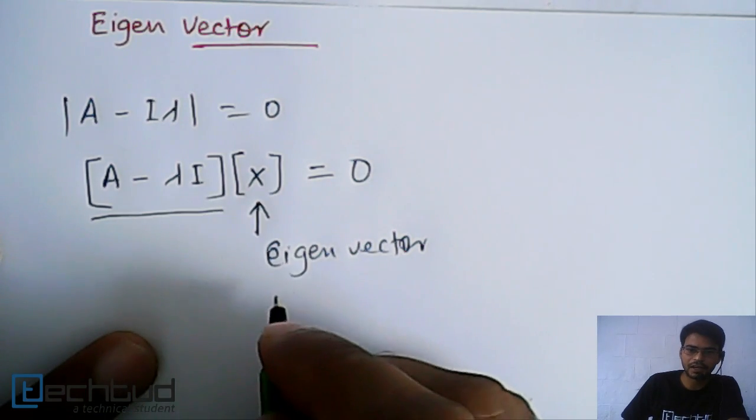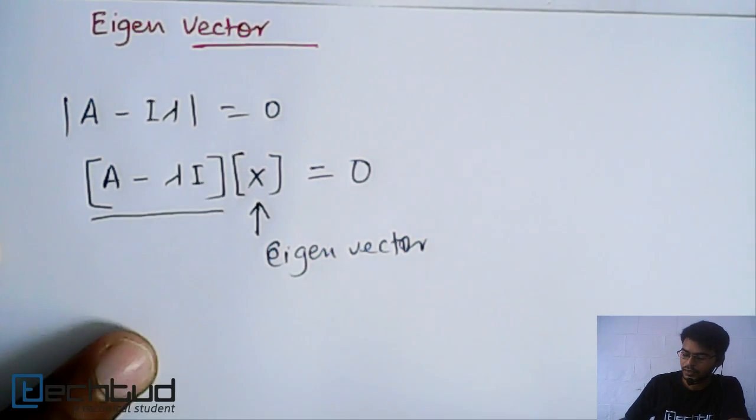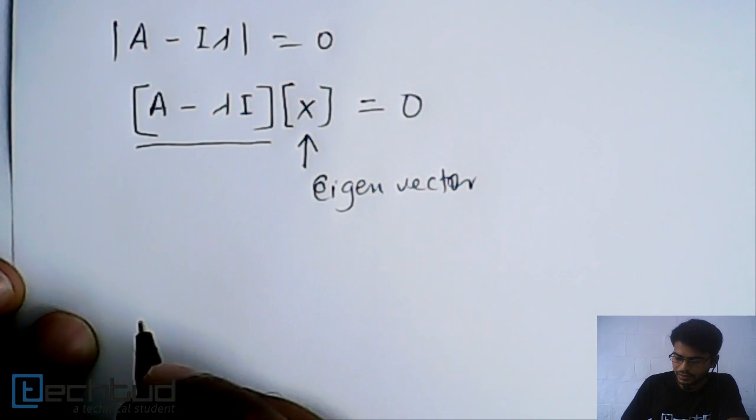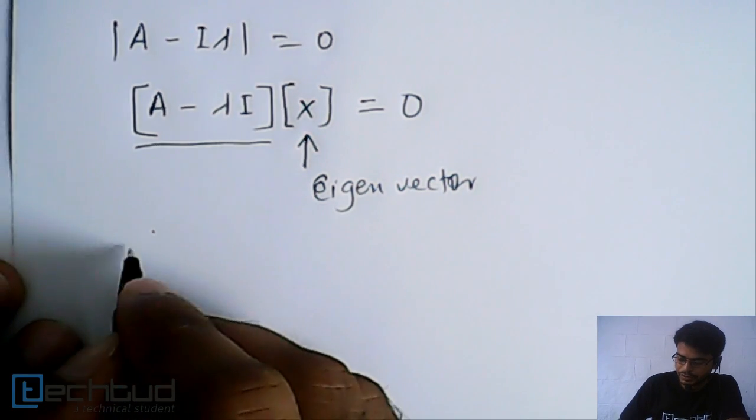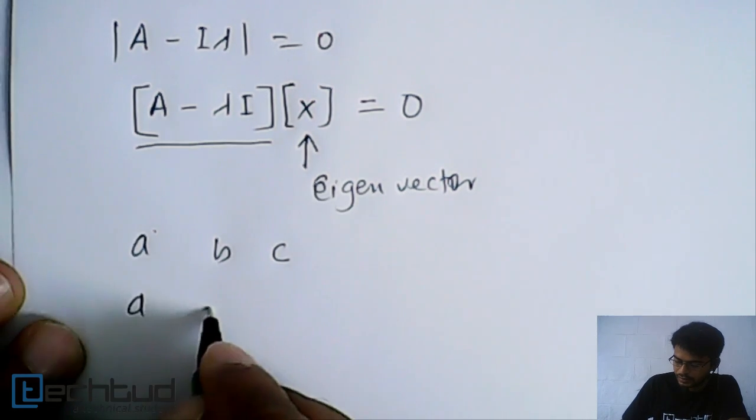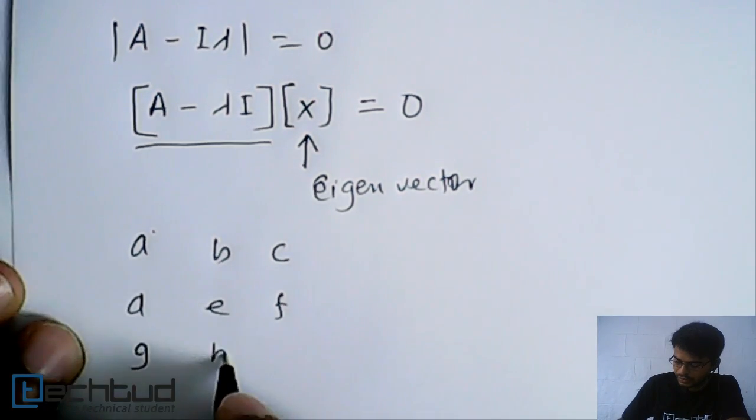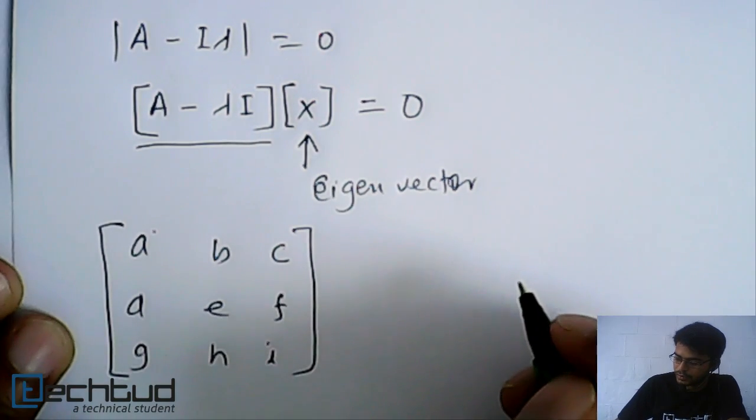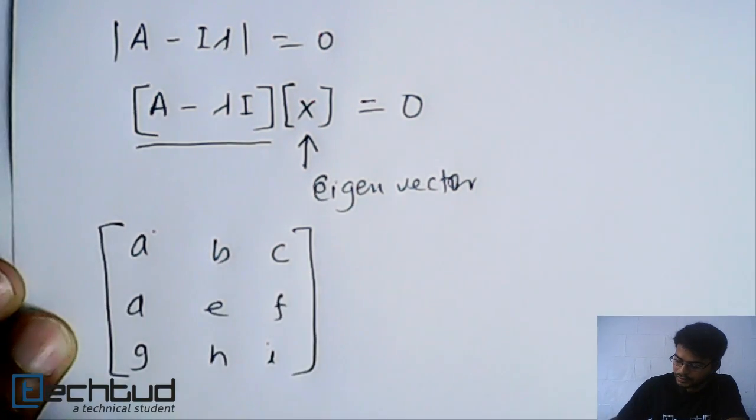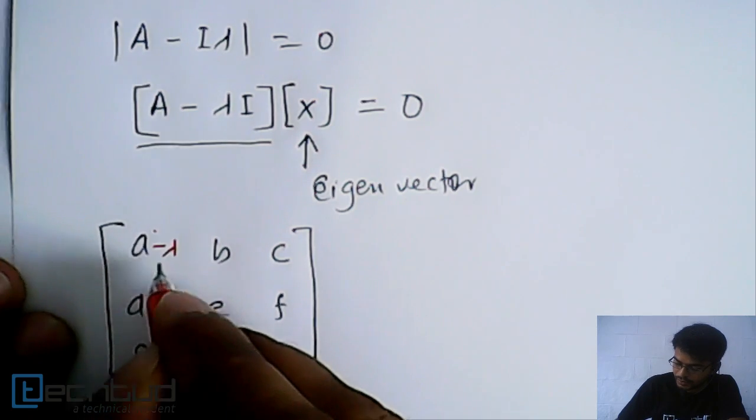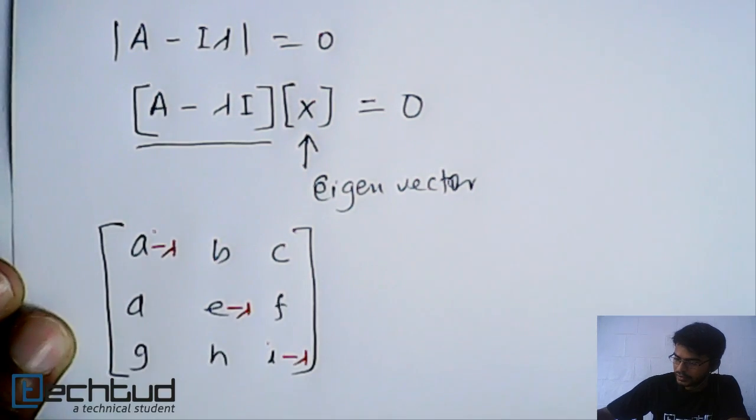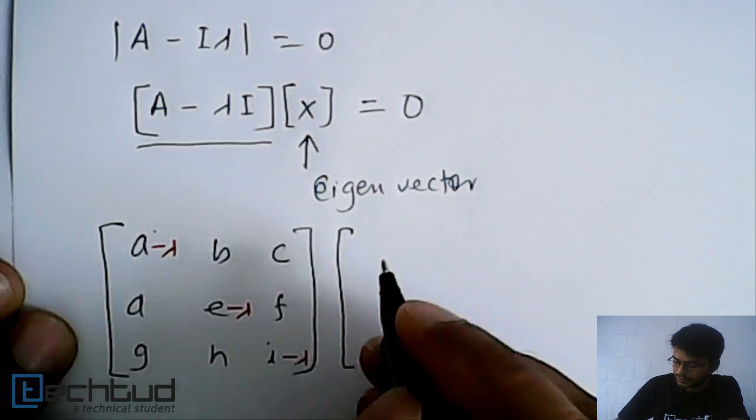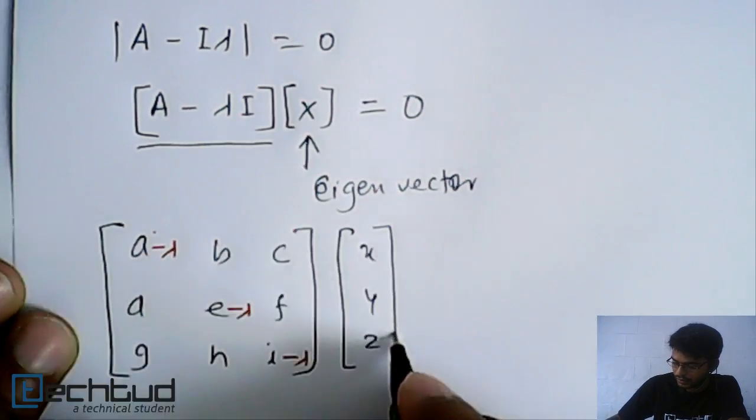For example, if we take a matrix with elements a, b, c, d, e, f, g, h, i, and we have a lambda value, we will subtract lambda from the diagonal elements. Then we will multiply this with [x, y, z].